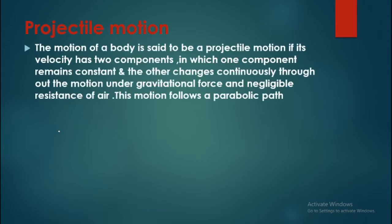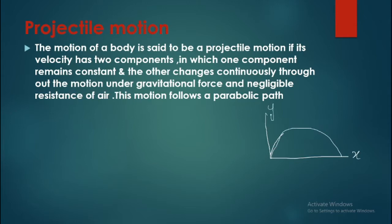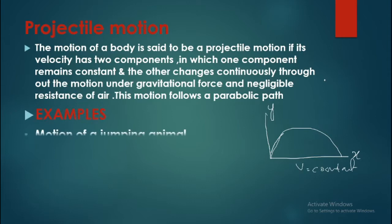First of all, what is projectile motion? Motion of a body is said to be projectile motion if its velocity has two components. There are two components of motion: the X component and the Y component. We call it projectile motion. The velocity in the x-axis is constant, while velocity in the y-axis is variable.